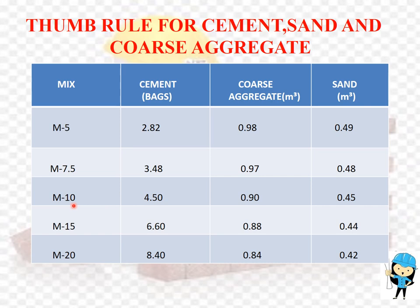For mix design M10: 4.50 bags of cement, 0.90 m³ coarse aggregate, and 0.45 m³ sand are required. For M15 mix design: 6.60 bags of cement, 0.80 m³ coarse aggregate, and 0.44 m³ sand are required. For M20 mix design: 8.40 bags of cement, 0.84 m³ coarse aggregate, and 0.42 m³ sand are required.